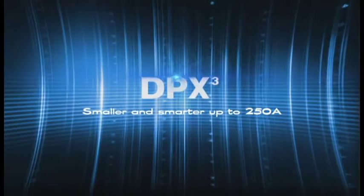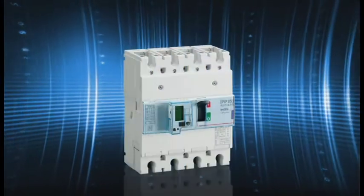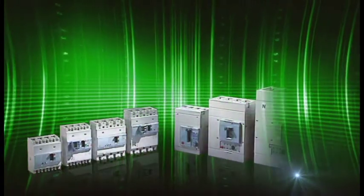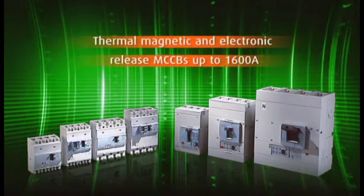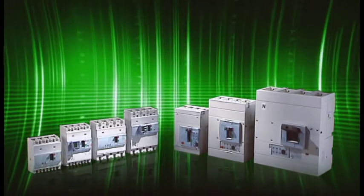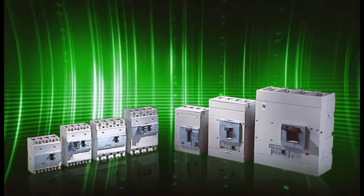DPX Cubed is the ideal solution for maximum protection of electrical installations and for good continuity of service. The range of DPX molded case circuit breakers is available in five sizes with rated currents from 16 to 1600 amps and braking capacities up to 100 kilo amps.